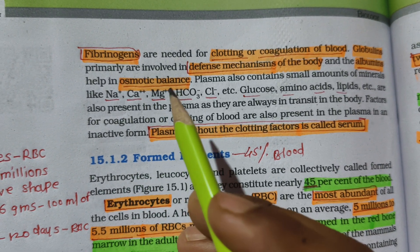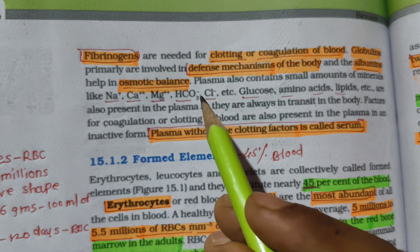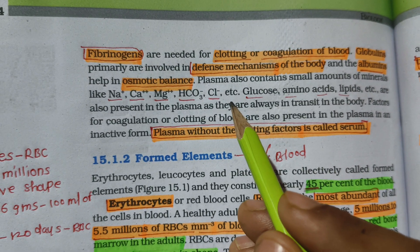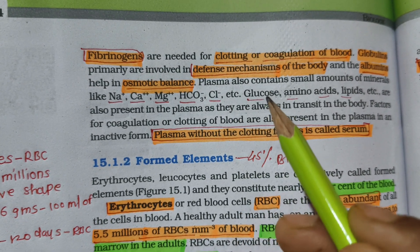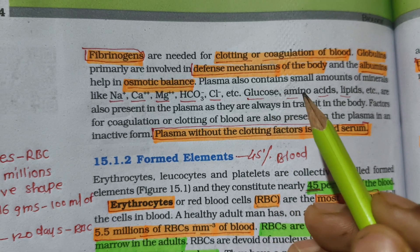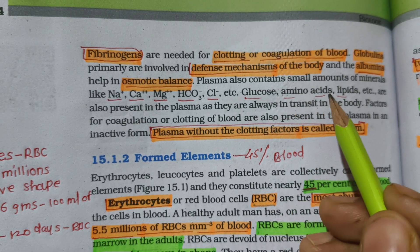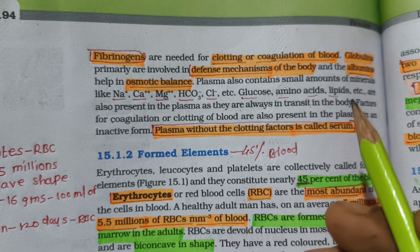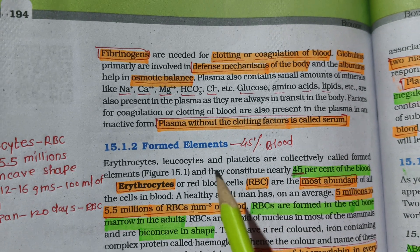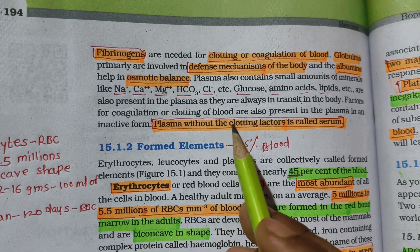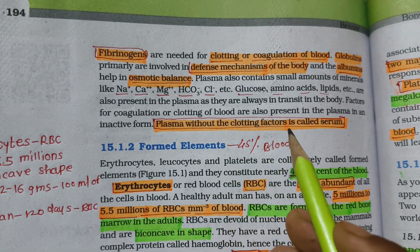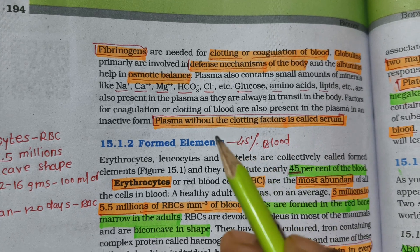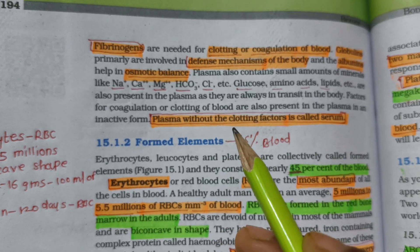Minerals in plasma include calcium, magnesium, carbonate ions, and chloride ions, along with glucose, amino acids, and lipids. Plasma without the clotting factors is called serum.